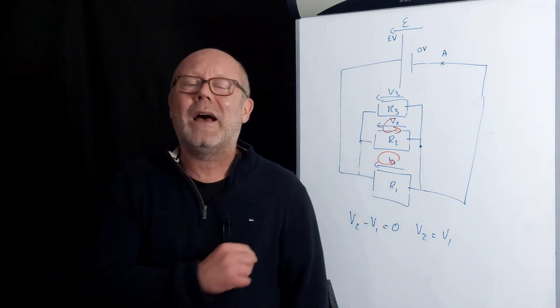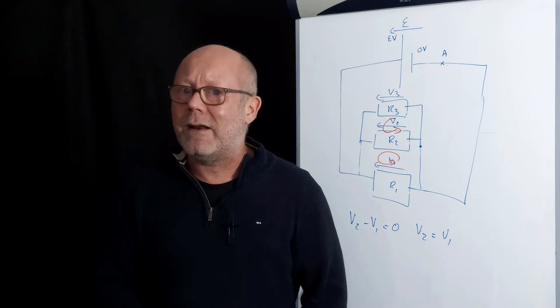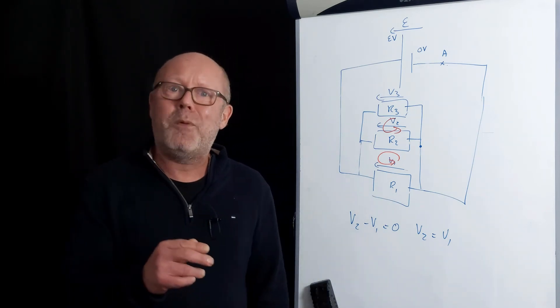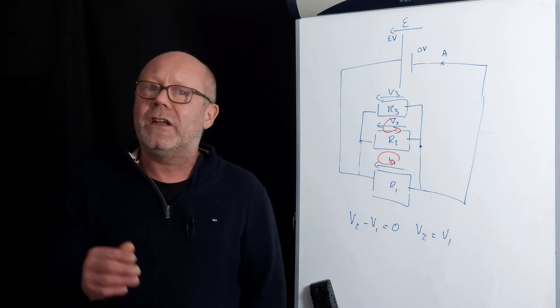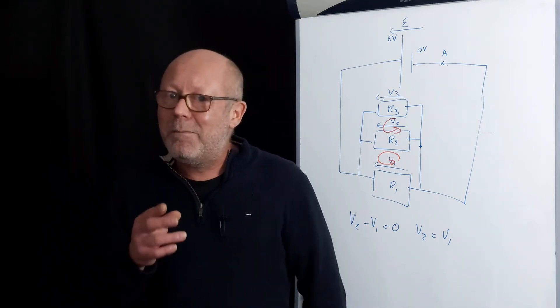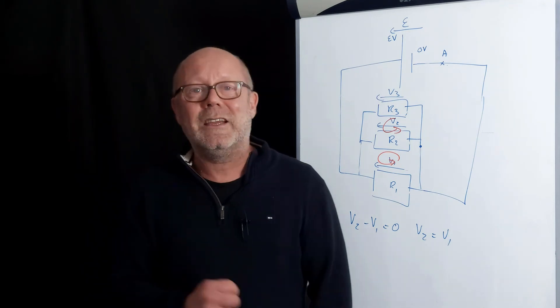Resistors in parallel have the same potential drop across them. Voila! I hope this helps you understand why two resistors in parallel exhibit the same potential drop. Don't hesitate to post more high school physics questions in the comments. I will try to answer them directly. And I'll pick some to be answered with the video. Like this.